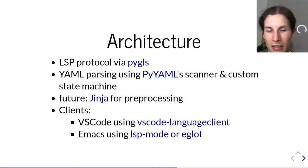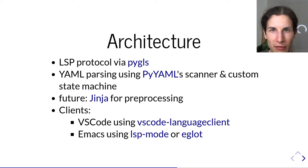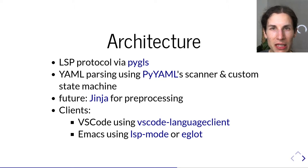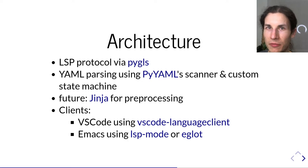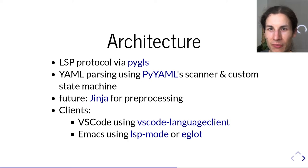The frontend is currently a tiny component — essentially the VS Code and Emacs extensions. These don't do a whole lot: they just launch the language server and tell the editor that if you're editing SaltStack files, talk to this language server. And that's about it.